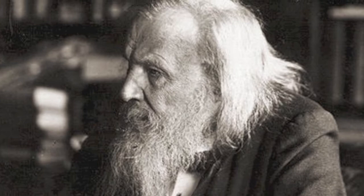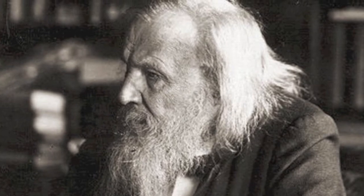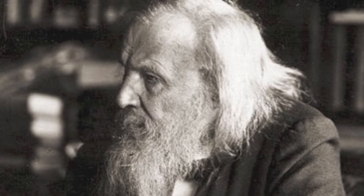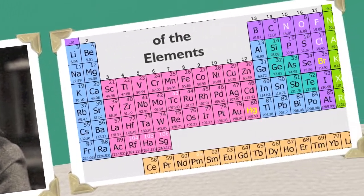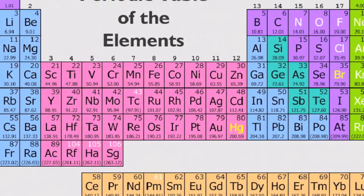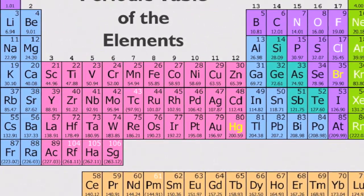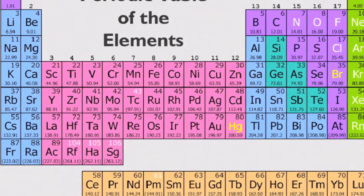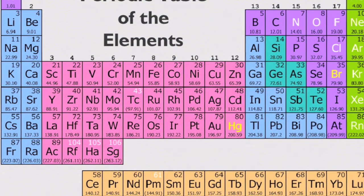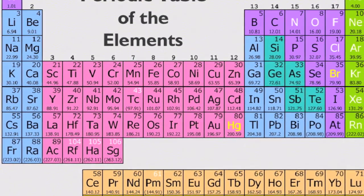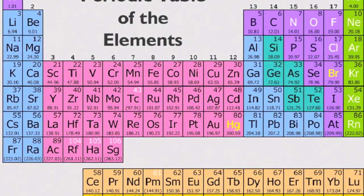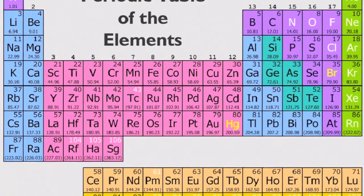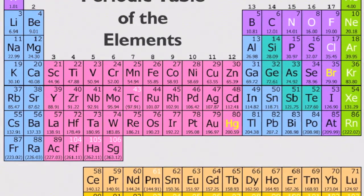Dissatisfied with textbooks of his time, Mendeleev decided to write his own book. His textbook, written between 1868 and 1870, would provide a framework for modern chemistry's periodic table of the elements.